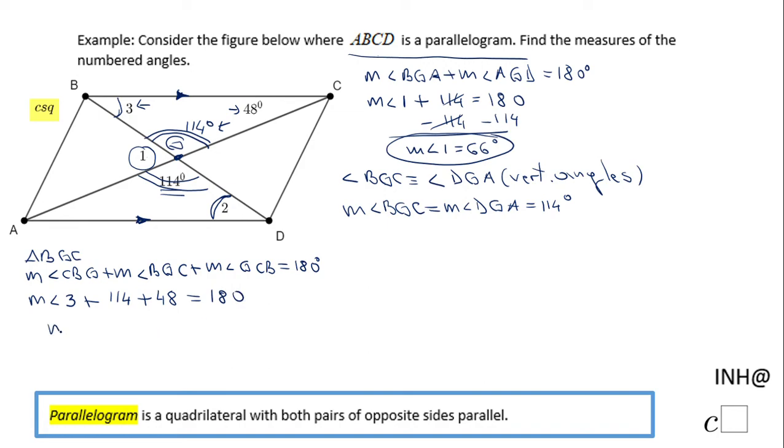We add 114 and 48, which equals 162. So angle 3 plus 162 equals 180. Subtract 162 from both sides and we have the measure of angle 3 equals 18 degrees.